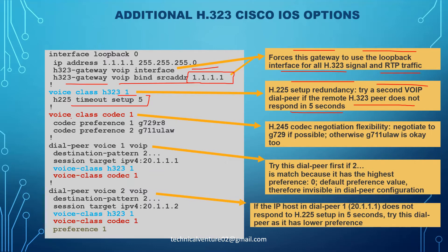Then 'voice class codec 1' is configured, specifying codecs in preference order: 'codec g729r8 preference 1' is first priority, and 'codec g711ulaw preference 2' is second. This means every dial peer using voice class codec 1 will prefer G729r8, and if not possible, G711 mu-law is acceptable - enabling H245 codec negotiation flexibility.